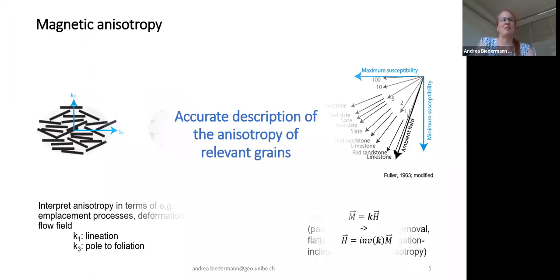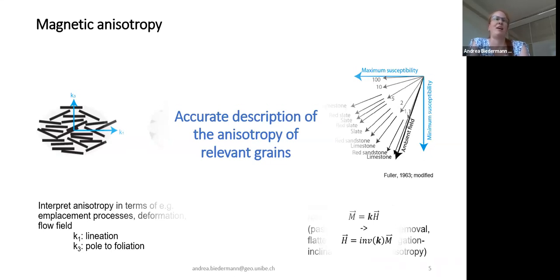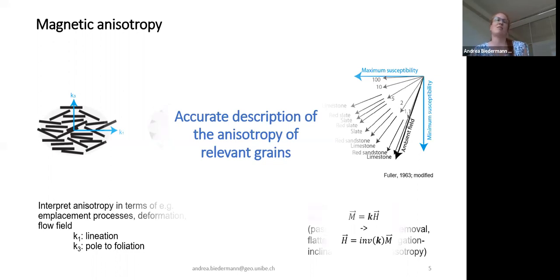Although these applications relate to very different fields within earth sciences — one being structural geology and tectonics, and the other paleomagnetism — the aim is the same: we want an accurate description of the anisotropy of the relevant grains. In paleomagnetism, those are the grains that carry the remanence. In formation and tectonic studies, the relevant information may be carried by paramagnetic or ferromagnetic grains, and could be primary or secondary. We need to define which grains we're interested in and characterize their fabric.